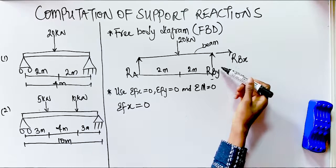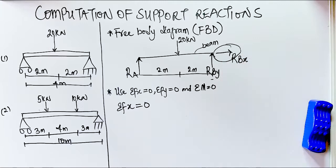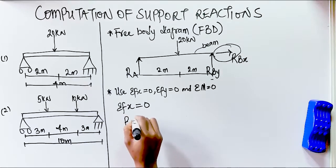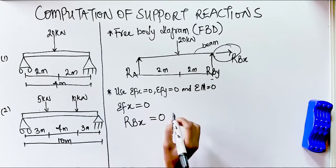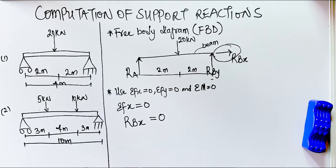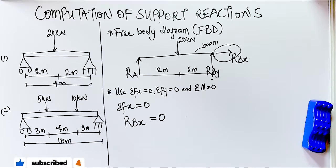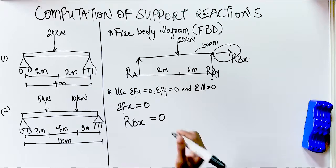Looking at our diagram, we have just one horizontal force, which is Rbx. Since the summation of horizontal forces must equal zero and there is only one horizontal force, we write Rbx = 0. This is why Rbx is most times neglected — because with only one horizontal force it will always equal zero.